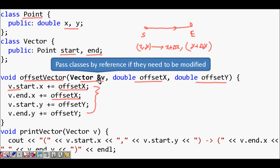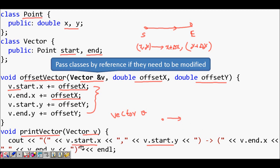In another case, print_vector does not change the attributes of the class — it only uses them. So we write vector V (a copy, not a reference), and then print V.start.X, V.start.Y, V.end.X, and V.end.Y. Since we are just printing and not modifying, we don't need a reference — a simple copy of the object is sufficient.